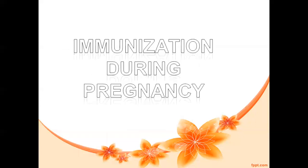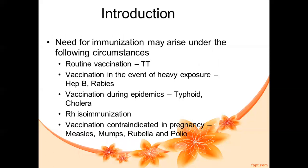Moving on to immunization during pregnancy. According to the circumstances, there is a need for immunization. This topic is divided into: routine vaccines, vaccination in the event of heavy exposure, vaccination during epidemics like typhoid or cholera, RH isoimmunization for RH-negative mothers with RH-positive partners, and vaccines which are contraindicated during pregnancy.